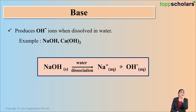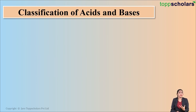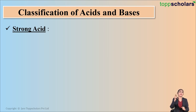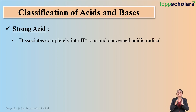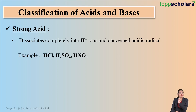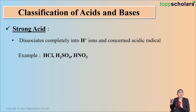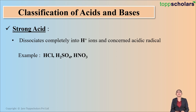Let us classify these acids and bases according to the Arrhenius theory. Acids can be classified as strong acids. A strong acid is an acid which dissociates completely into H+ ions and the concerned acidic radical. For example, HCl that is hydrochloric acid, H2SO4 that is sulfuric acid, HNO3 that is nitric acid — all these three acids are strong acids because when dissolved in water, they dissociate completely to give you H+ ions and the concerned acidic radical.